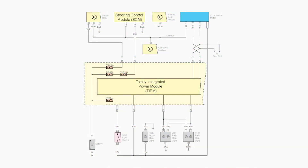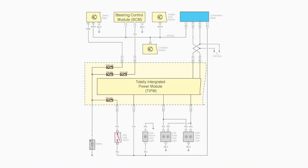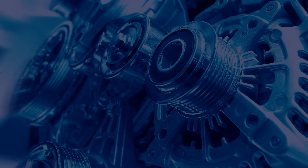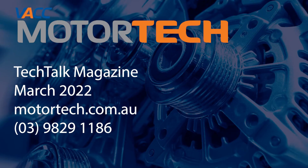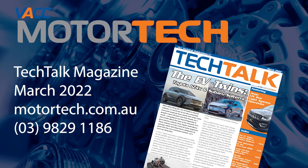For more information about interpreting the lighting circuit wiring diagrams on Jeep, Dodge and Chrysler vehicles from 2008 onwards, see the March 2022 issue of Tech Talk, log on to VACC's Motor Tech, or call VACC's Tech Advisory Service.